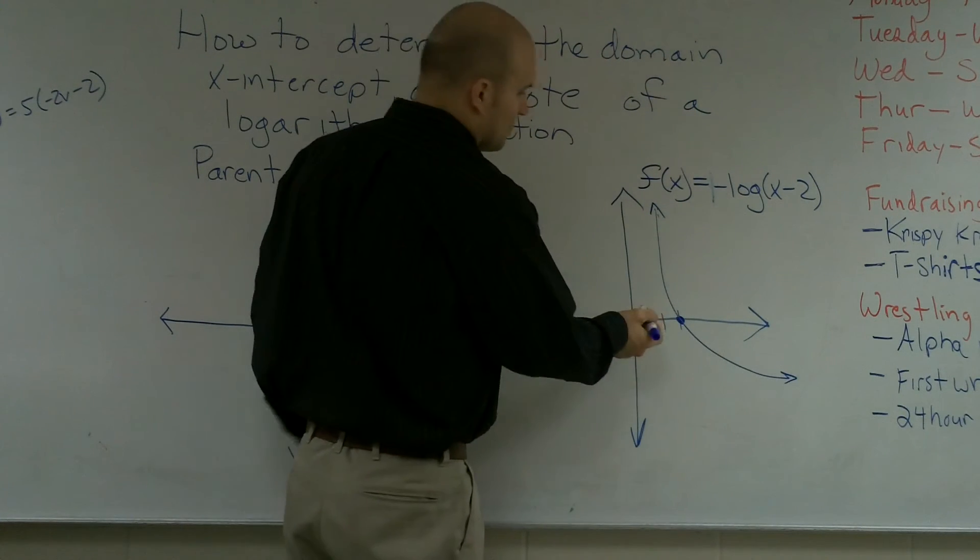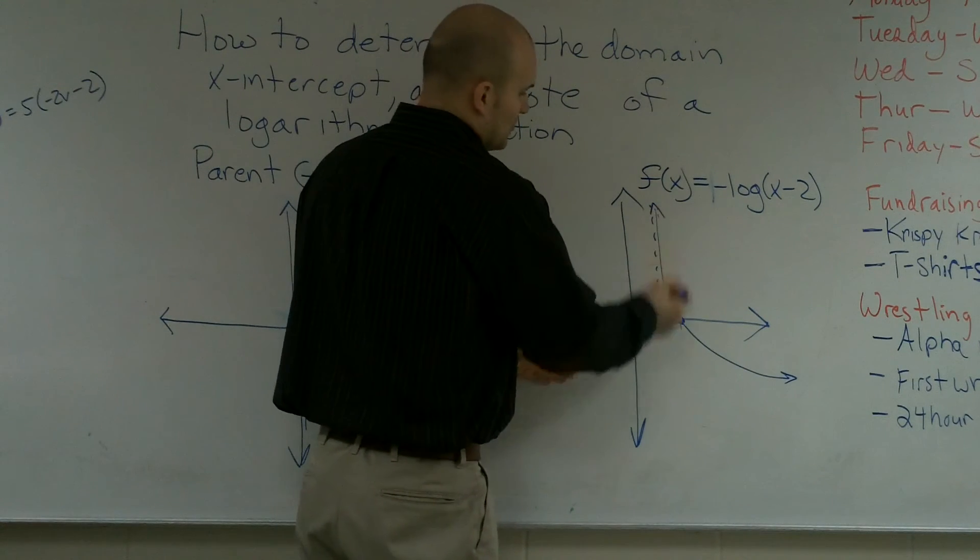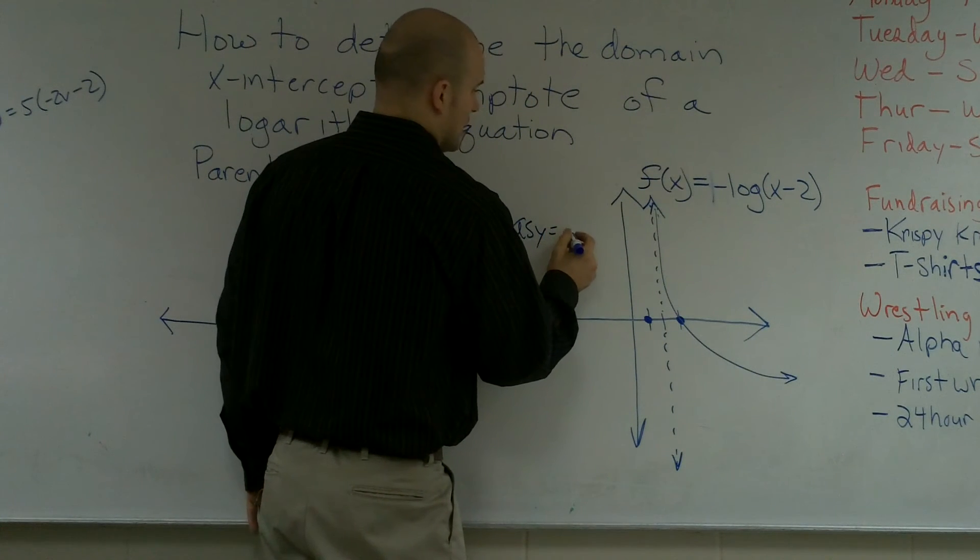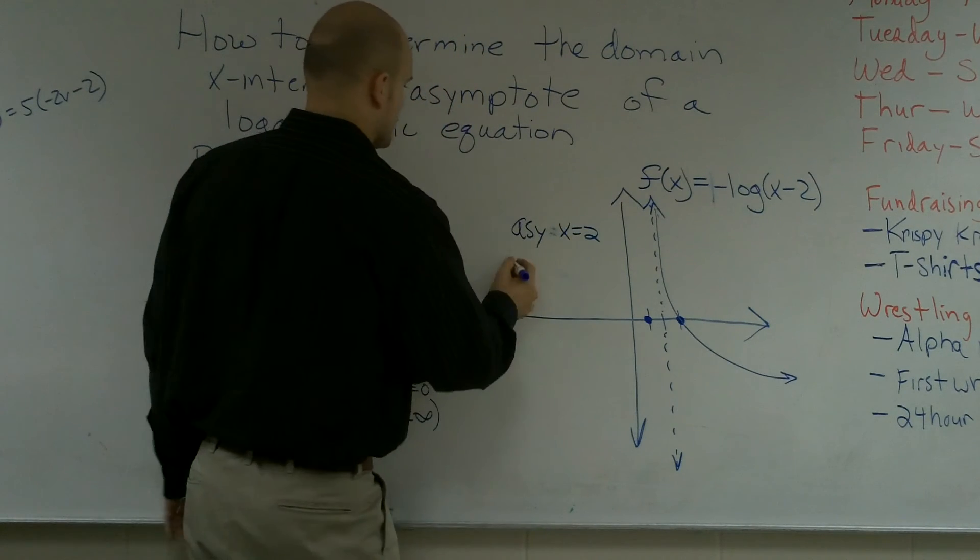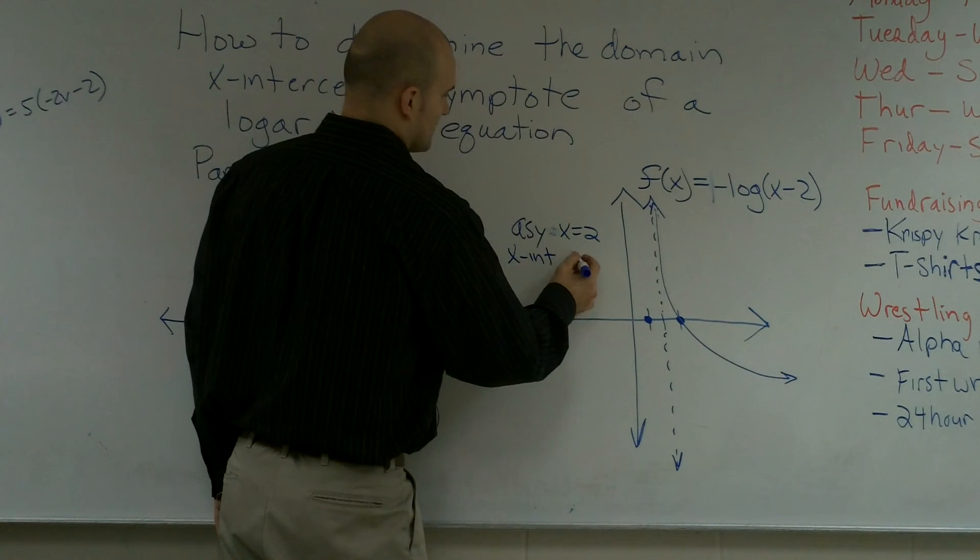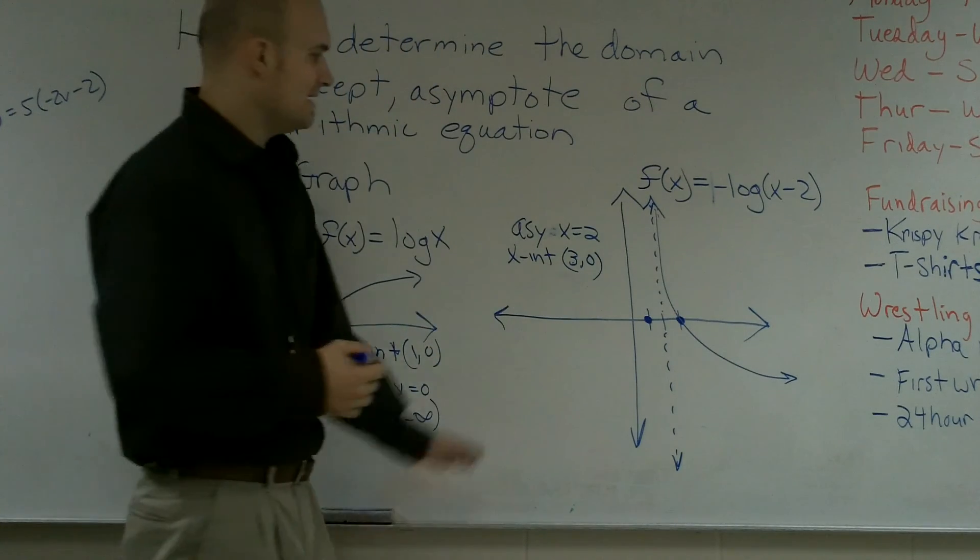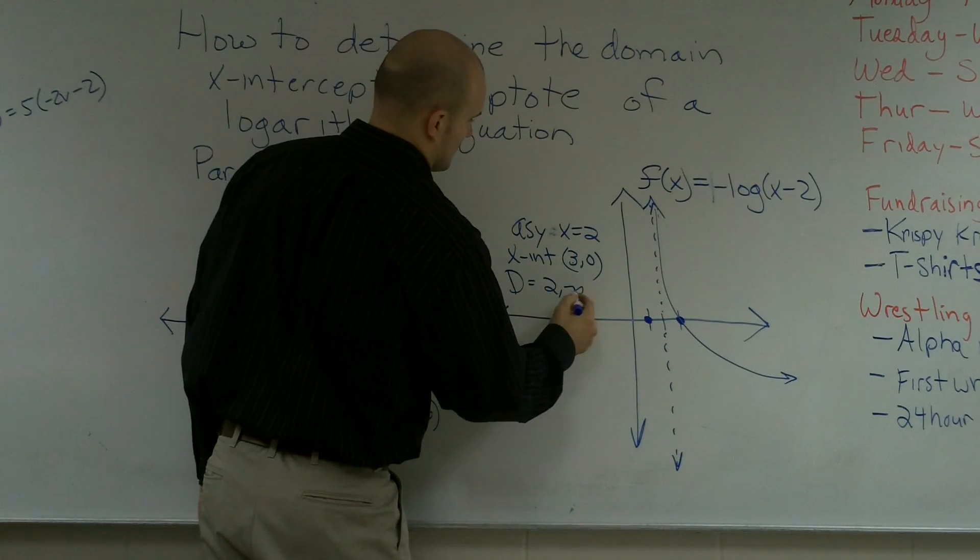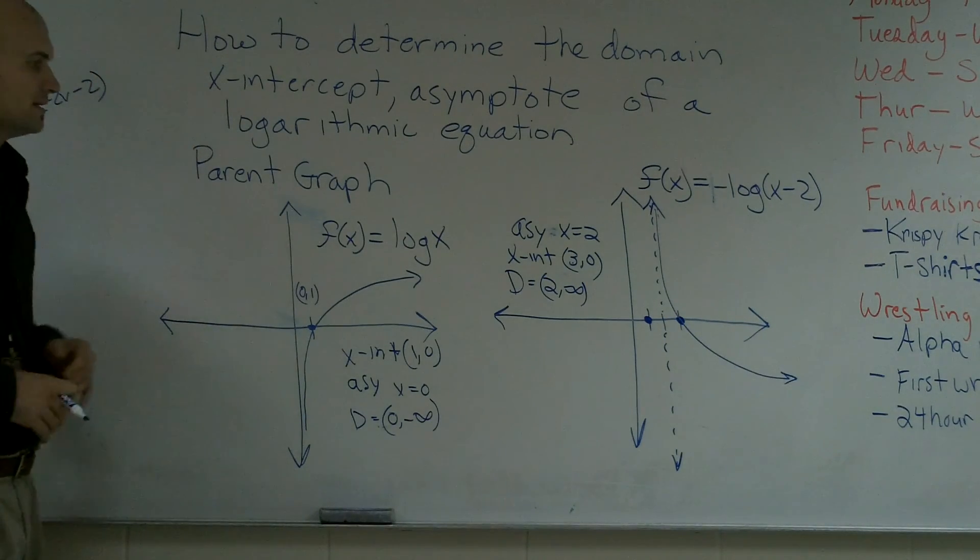Therefore, I know that now my asymptote, if it was originally at 0, and I shifted 2 to the right, now I have an asymptote at positive 2. So my asymptote now is when x equals 2. My x-intercept is at now (3,0). And now I also have a domain, which is from 2 to infinity. So that is how you determine the domain, x-intercept, and asymptote of a logarithmic equation.